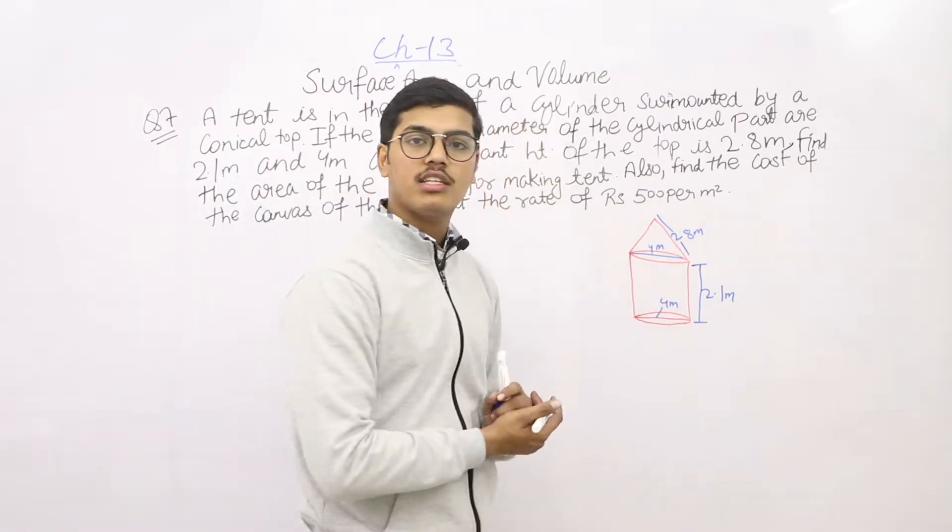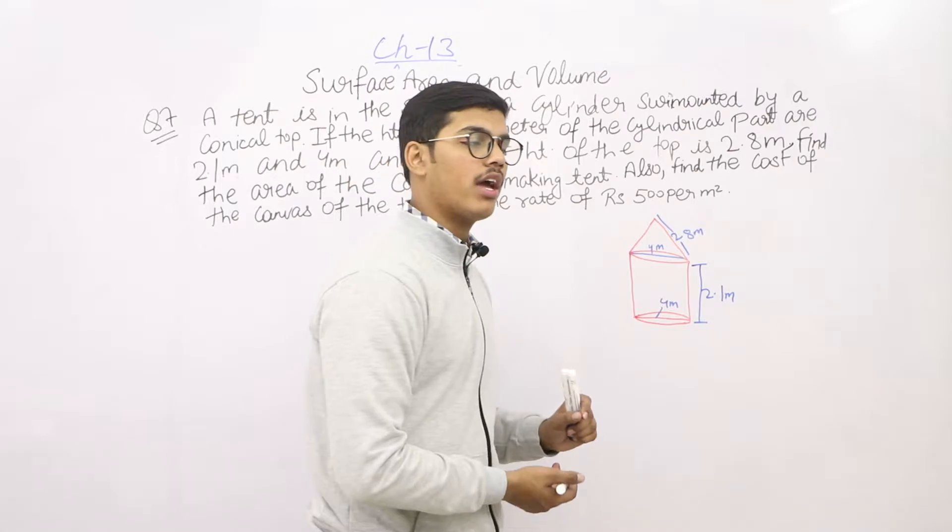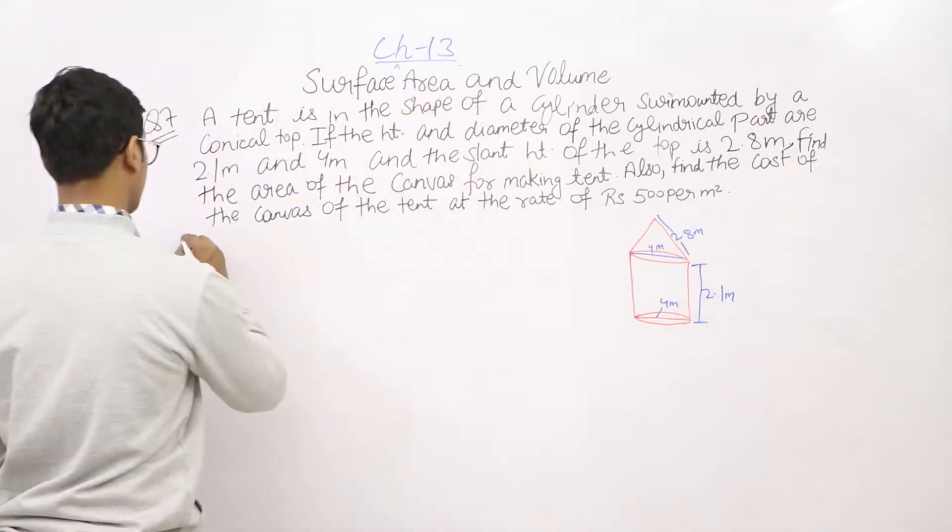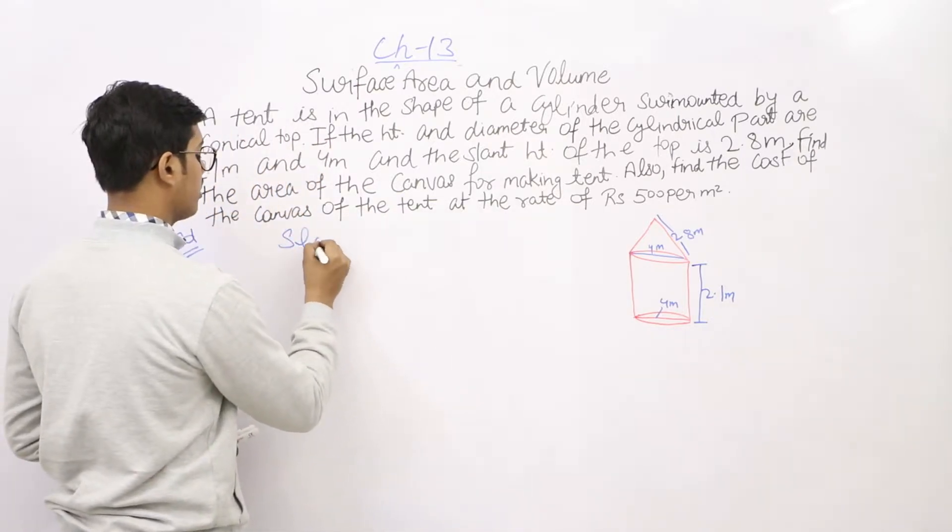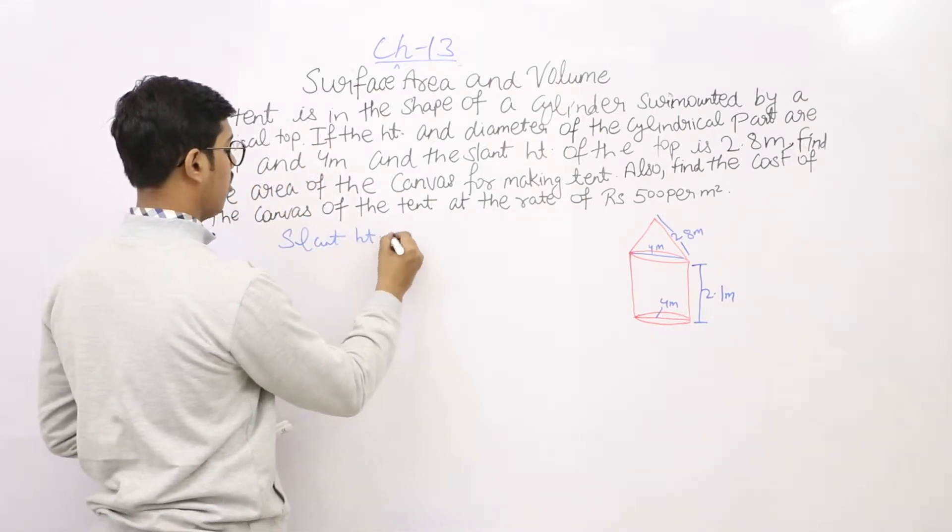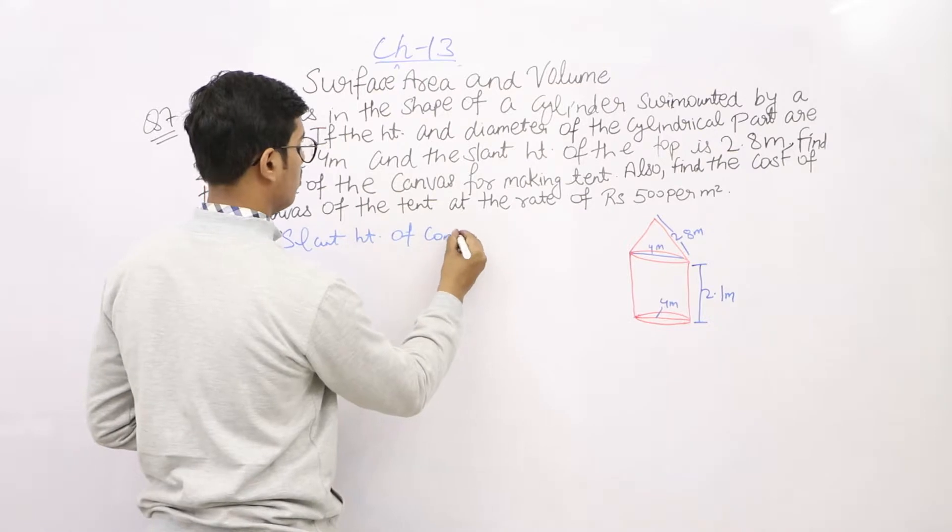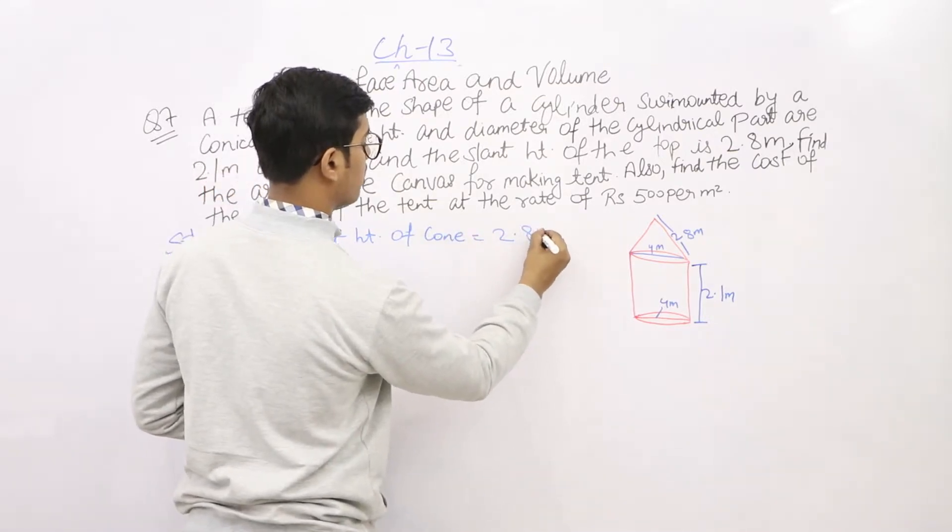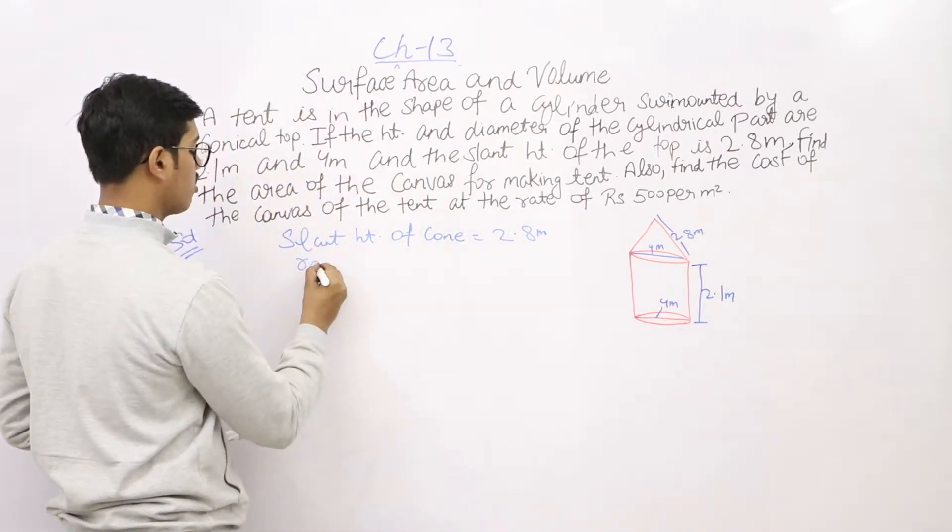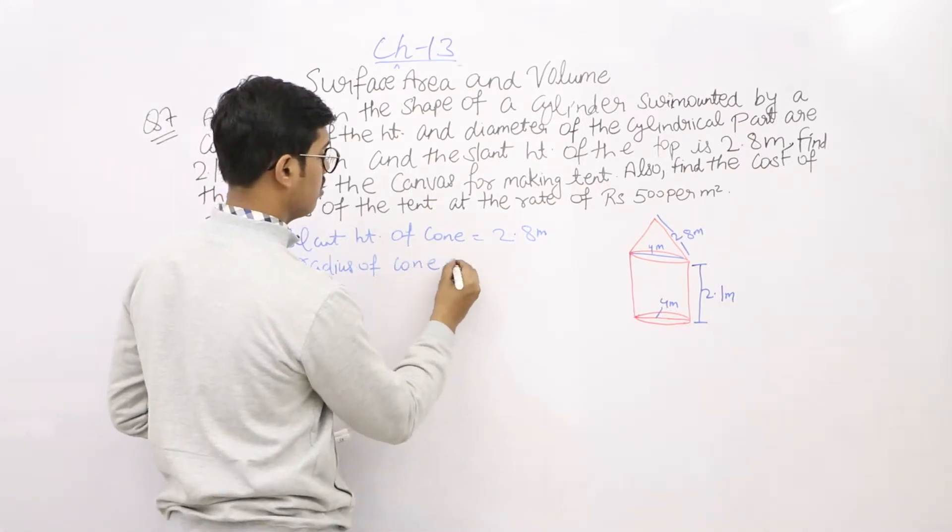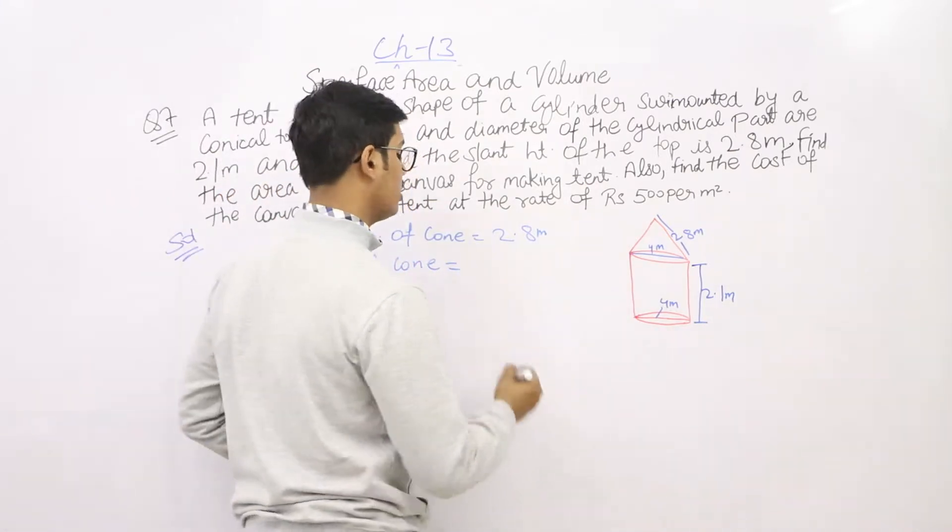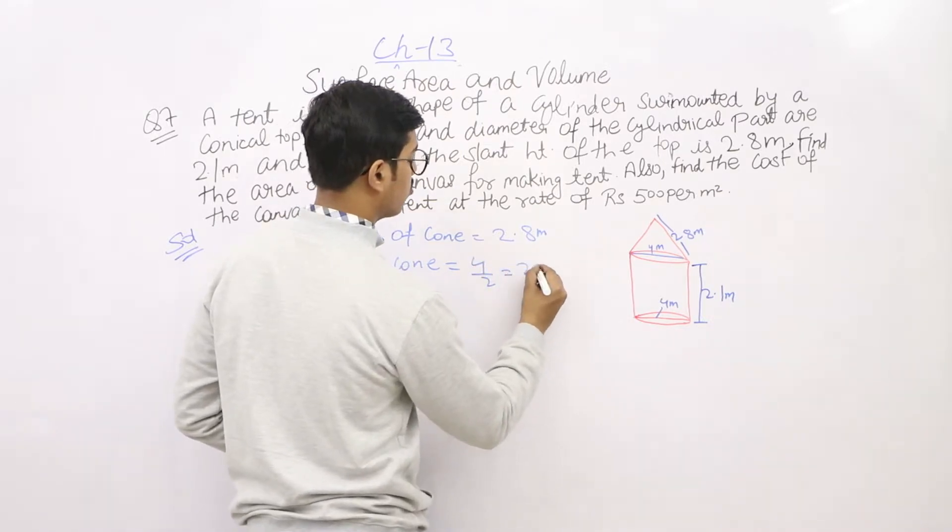Let's start. The slant height of the cone is 2.8 meter. The radius is 2 meter.